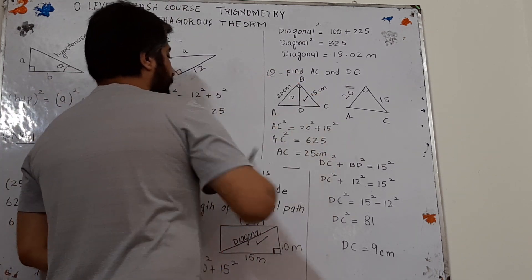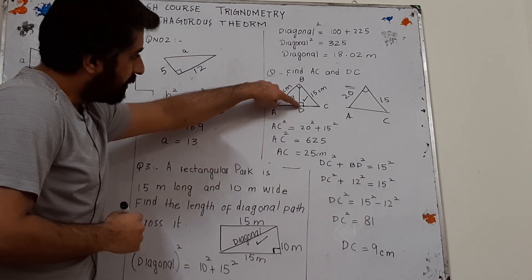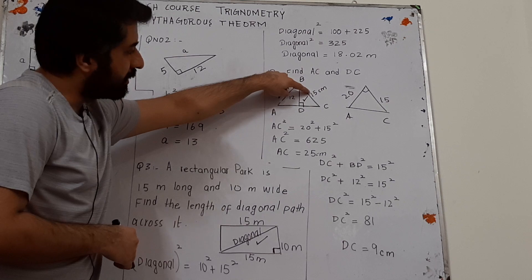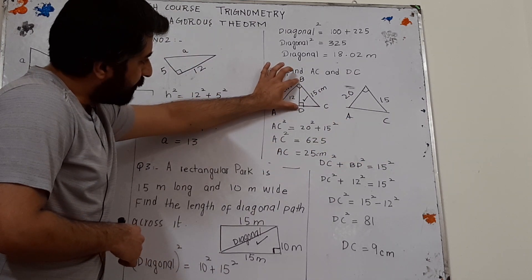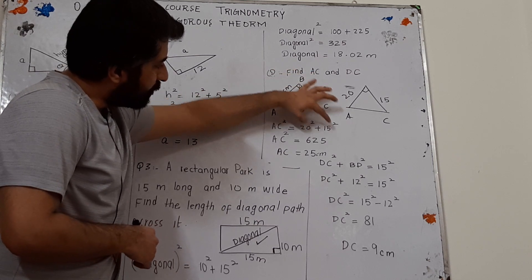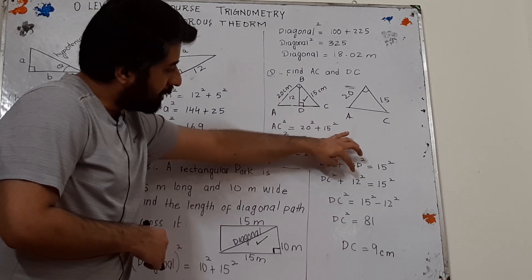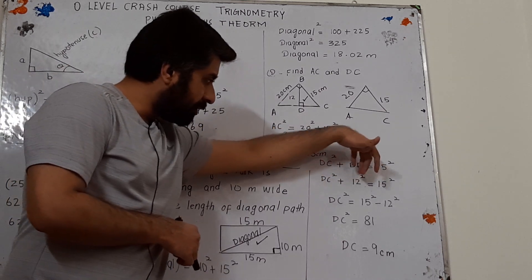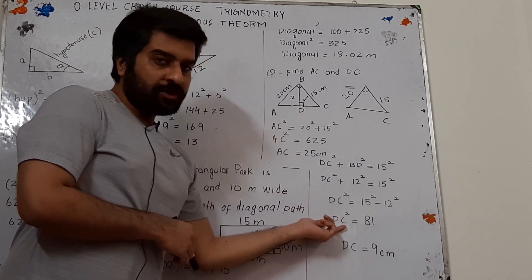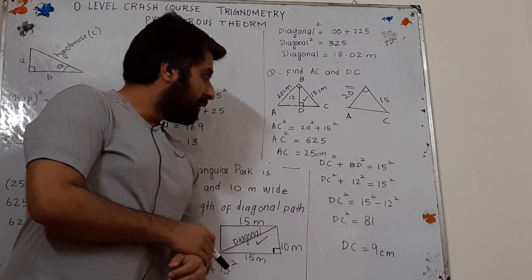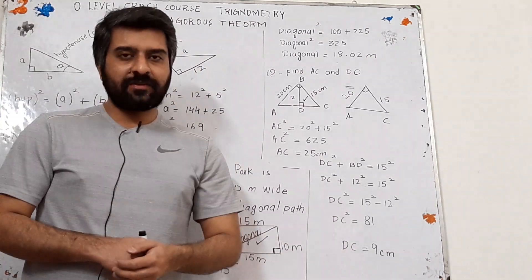Now DC can be obtained using the other triangle. In this triangle there is a right angle, and with this right angle, the length 15 is the hypotenuse. So 15 squared equals BD squared plus DC squared. We know BD is 12, so 12 squared is used. Shifting 12 squared to the other side: 15 squared minus 12 squared gives 81, which equals DC squared. Taking square root on both sides: square root of 81 gives 9 centimeters. So DC equals 9 centimeters. This concludes the topic of Pythagorean theorem; in the next lesson we will study trigonometric ratios, the law of sines, and the law of cosines.